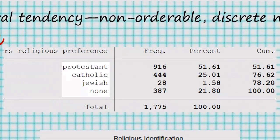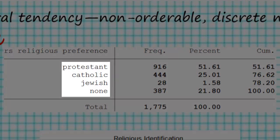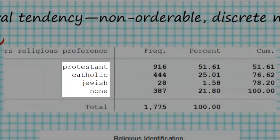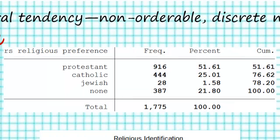You can see up top that the possible responses are Protestant, Catholic, Jewish, and none. From the information given in this slide, there are three ways that we can figure out the modal category.